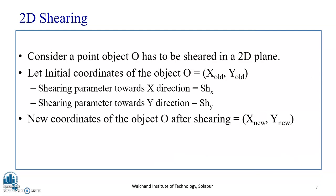Consider a point object O that has to be sheared in a 2D plane. Let the initial coordinates of object O be x-old and y-old. The shearing parameter towards the x direction is represented as shx, whereas the shearing parameter towards the y direction is shy. The two new coordinates of object O after shearing are x-new and y-new.